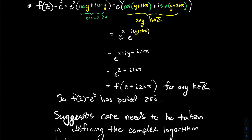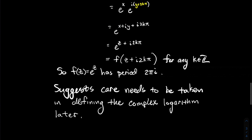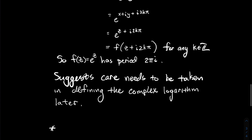Interesting. That suggests some care will need to be taken later when we talk about what the complex logarithm looks like. Since we don't have a one-to-one function, we'll need to discuss restricting the domain of the exponential in order to define a good inverse — but that's a later video.